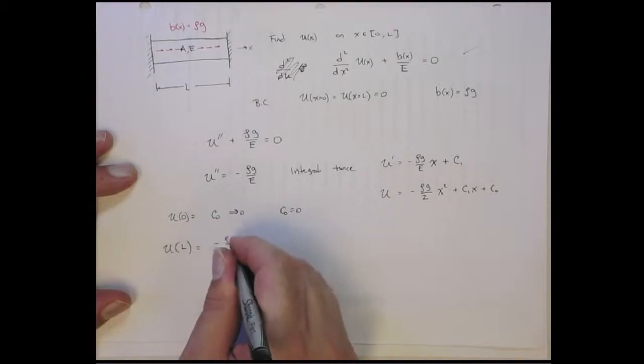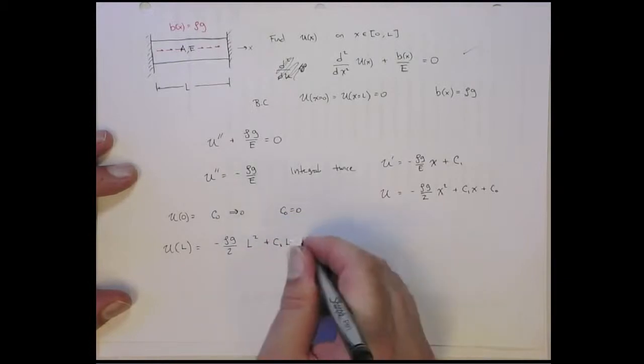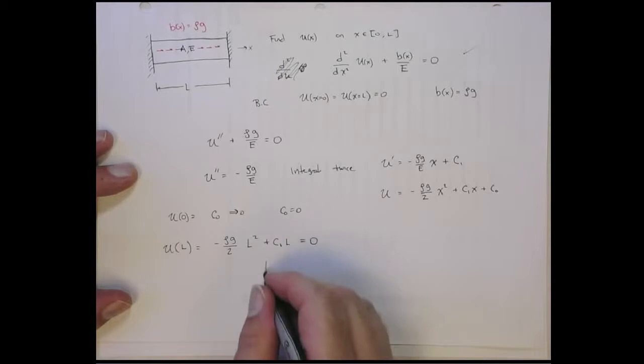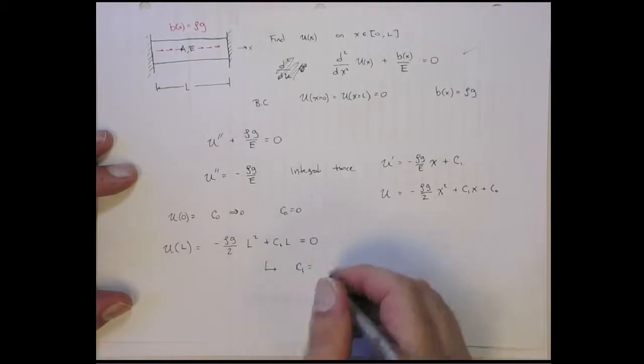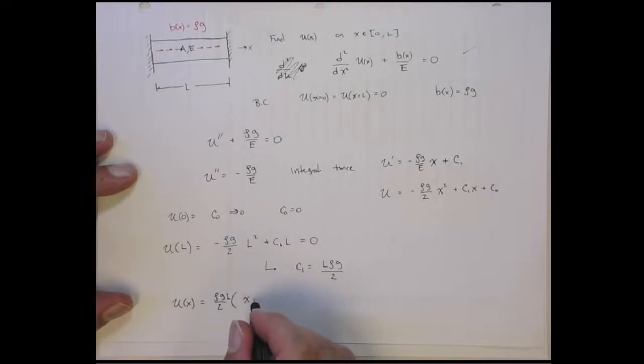And then using that, we get it at x equal to l. It gives me minus ρg over 2E times l squared plus c1 times l has to equal 0. Or from that, I can see that c1 has to equal ρgl over 2E.